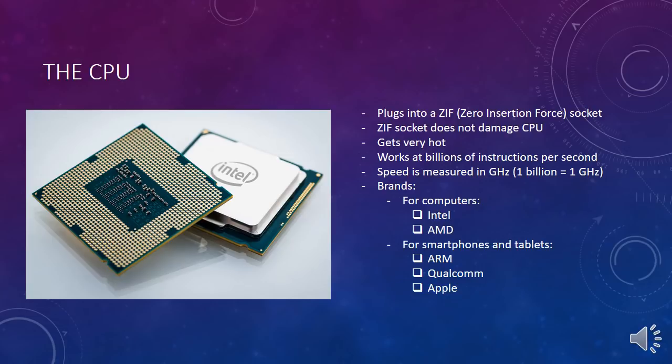The CPU is actually doing billions of instructions every second, so the speed is measured in gigahertz. Your CPU might be 2.7 or 3.4 or possibly more gigahertz, and one gigahertz equals one billion instructions per second. There are a lot of brands of CPUs — for computers, Intel and AMD are quite common, while smartphones and tablets use ARM, Qualcomm, and Apple.